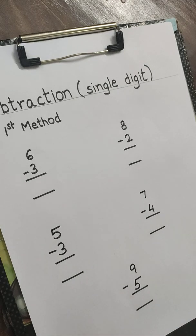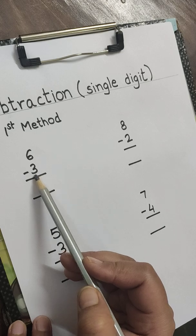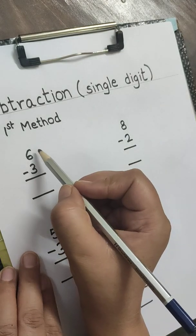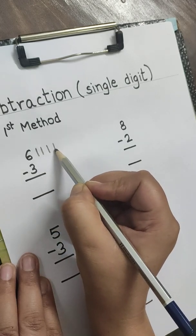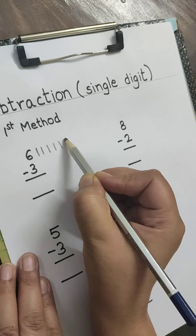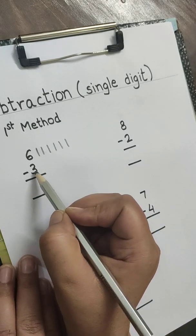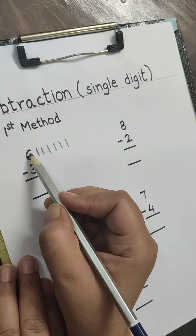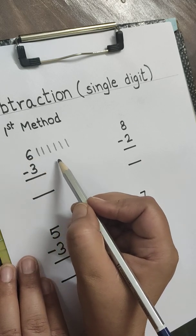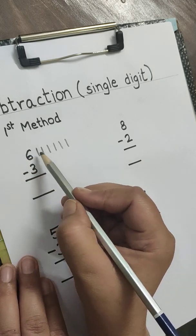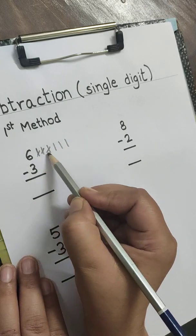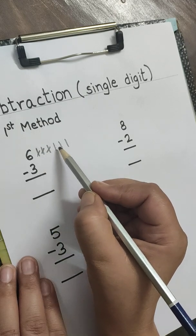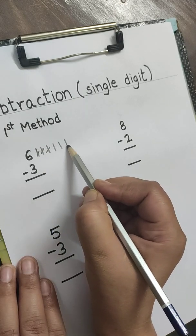Here you can see the first sum is 6 minus 3. So we will draw 6 lines: 1, 2, 3, 4, 5, 6. Now we have to minus 3 from this, so what will we do? We will not draw lines here. Instead we will minus the lines: 1, 2, 3. We have minus 3 lines. How many are left? 1, 2, 3.